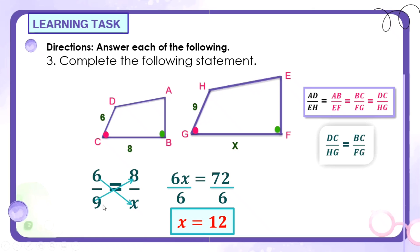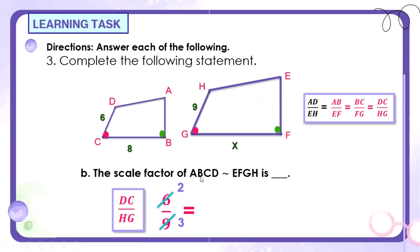Check natin. Pag pinag-cross-multiply mo sila, dapat equal. 6 times 12, kasi yung X natin is 12, that is 72. And 9 times 8 is also 72. The scale factor of quadrilateral ABCD similar to quadrilateral EFGH, nakuha na natin ito kanina, diba, yung scale factor. Kunin mo lang yung ratio ng mga corresponding sides niya. Kanina, ginamit natin 6 over 9, then isisimplify mo pa yan kasi divisible sila pareho sa 3. Ang scale factor natin is 2 thirds.